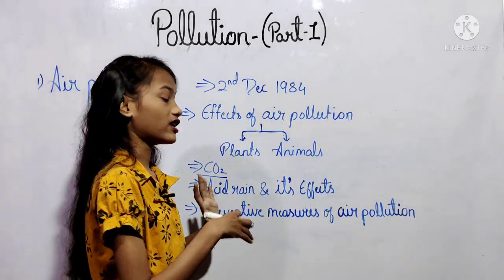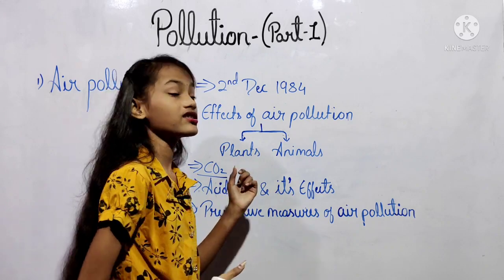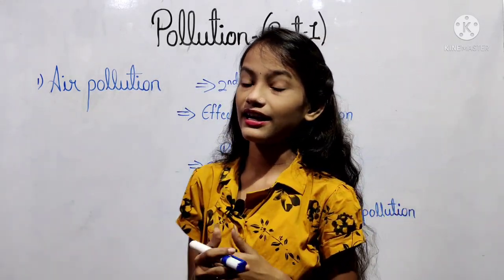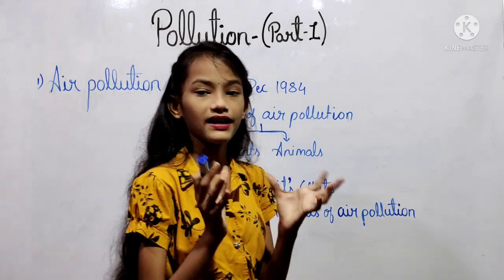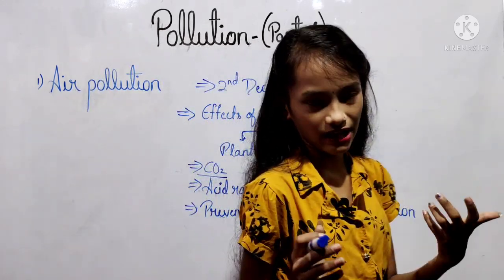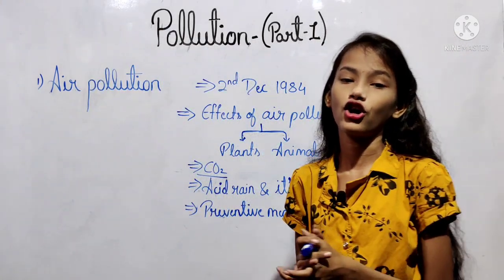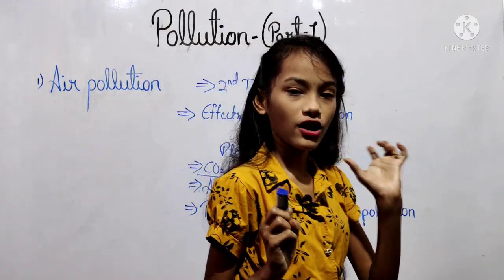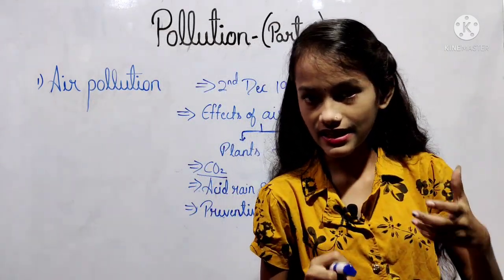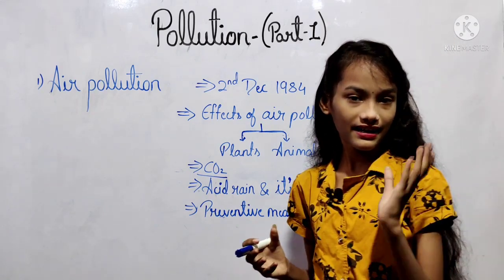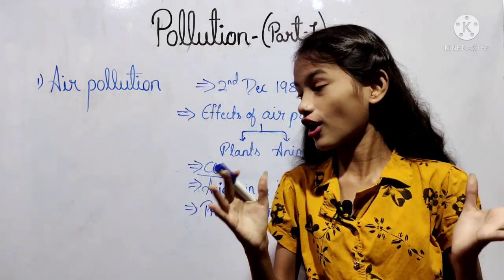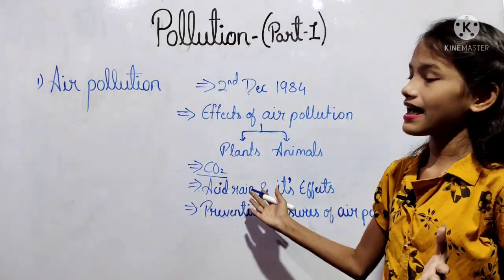Now we will see about acid rain and its effects. The oxides of sulfur and nitrogen are released into the air through the burning of coal, timber, and fuel oils. Those oxides mix with rainwater and form acids such as nitric acid, sulfuric acid, and nitrous acid. These acids mix with raindrops and snowflakes and come down as rain, called acid rain.